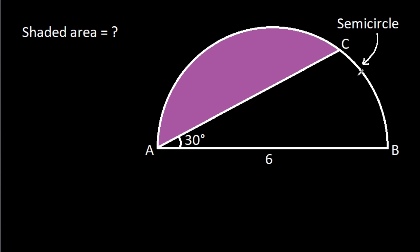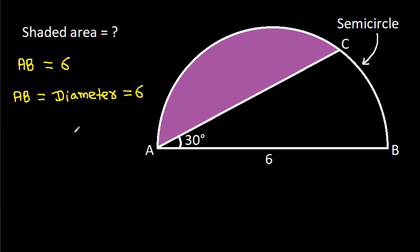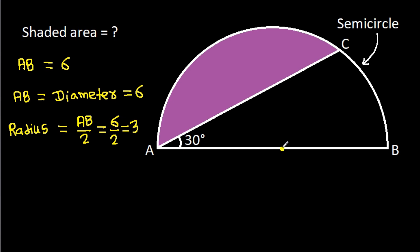In this video, we have been given a semi-circle in which AB is 6 and angle CAB is 30 degrees. We have to find the shaded area. AB is the diameter of the semi-circle, so the diameter is 6. Therefore, the radius of the semi-circle is AB over 2, which is 6 over 2, that is 3. Suppose the centre of the semi-circle is O.